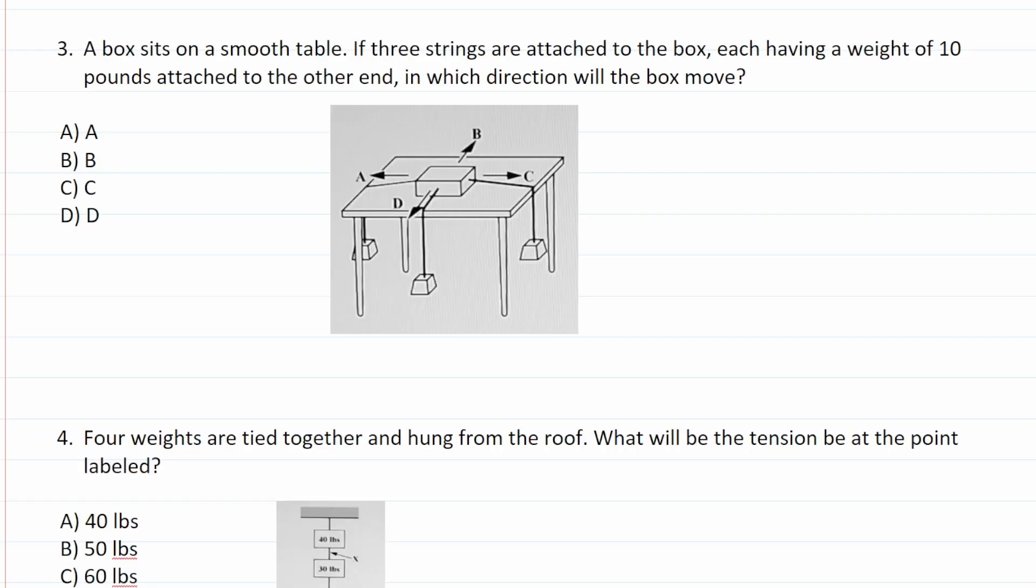Number three says a box sits on a smooth table. If three strings are attached to the box, each having a weight of 10 pounds attached to the other end, in which direction will the box move? So we can see that there's a weight attached to the box at direction A, as well as direction C. A and C cancel each other out. So the box is not going to move either in the A or C direction. We can see that there is a weight in the D direction, but there's no weight in the B direction. So in other words, this weight that doesn't have a counterweight over here at B is going to pull the box off the table this way in the direction of D. So this one is D.